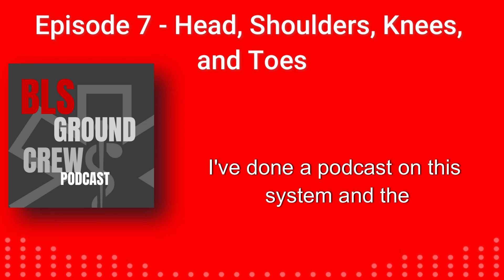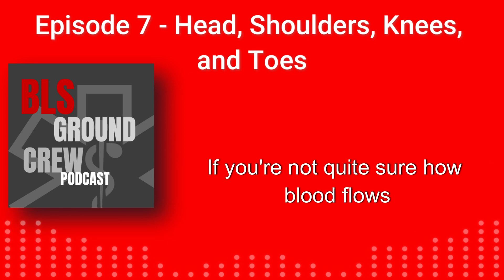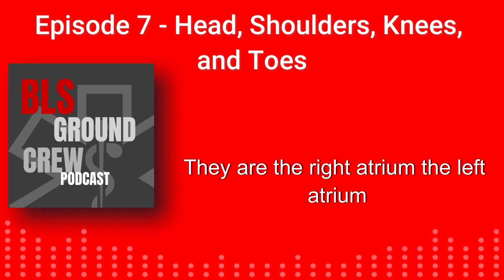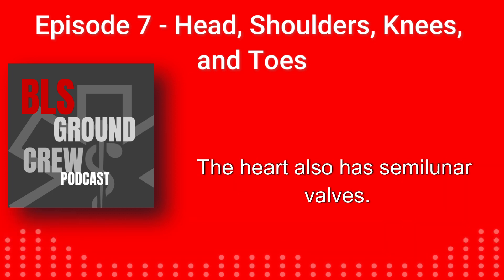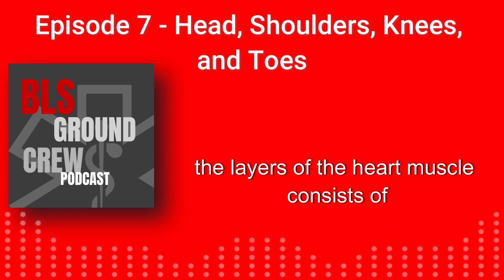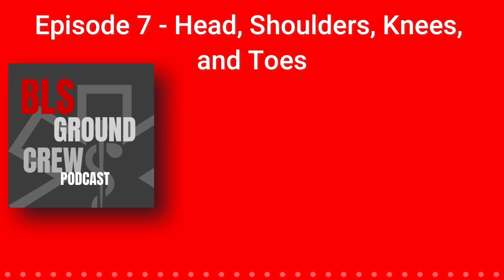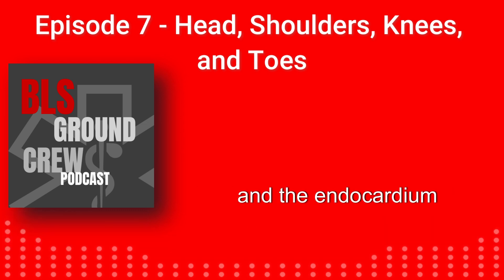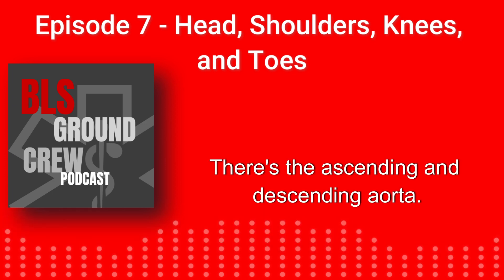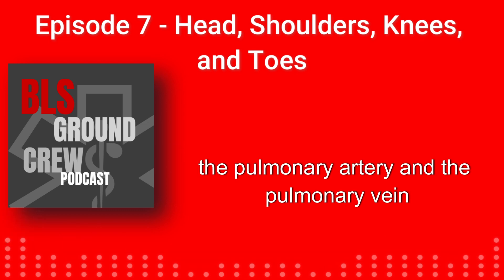For the cardiovascular system, I've done a separate podcast on blood flow through the heart called the Figure Eight of the Soul — check that out if you're unsure how blood flows. The heart has four chambers: the right atrium, the left atrium, the right ventricle, and the left ventricle. The heart also has semilunar valves, the tricuspid valve, and the mitral valve. The layers of the heart going from outer to inner are the pericardium, the myocardium, and the endocardium. Key vessels attached to the heart include the ascending and descending aorta, the superior and inferior vena cava, the pulmonary artery, and the pulmonary vein.